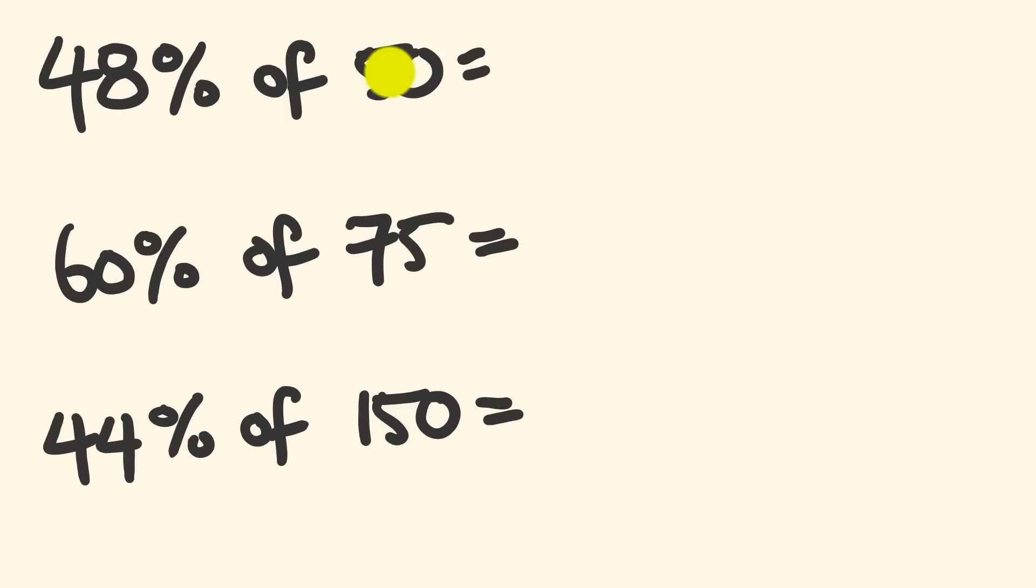So 48% of 50. We can flip this around, and we can say, okay, instead of this, we want to deal with 50% of 48. So what's 50% of 48? Well, 50% is just half, isn't it? So half of 48, the answer, a nice and easy 24.